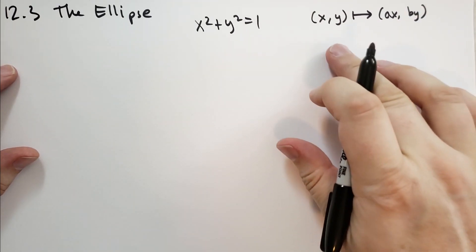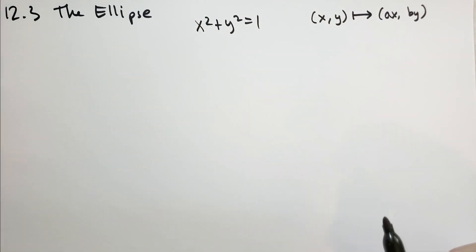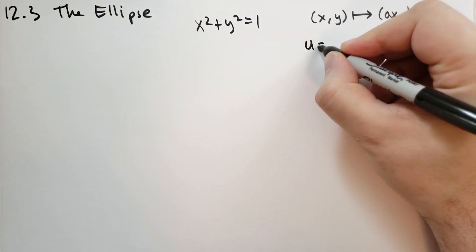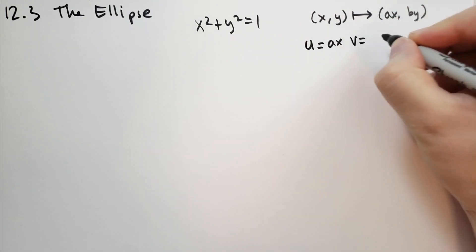And you can see that this is a kind of stretching operation, right? It's just kind of stretching the shape out. Well, what would happen to the circle if it were stretched in such a way? And he introduces the new variable u, which he is going to call ax, and v, which is going to be by.